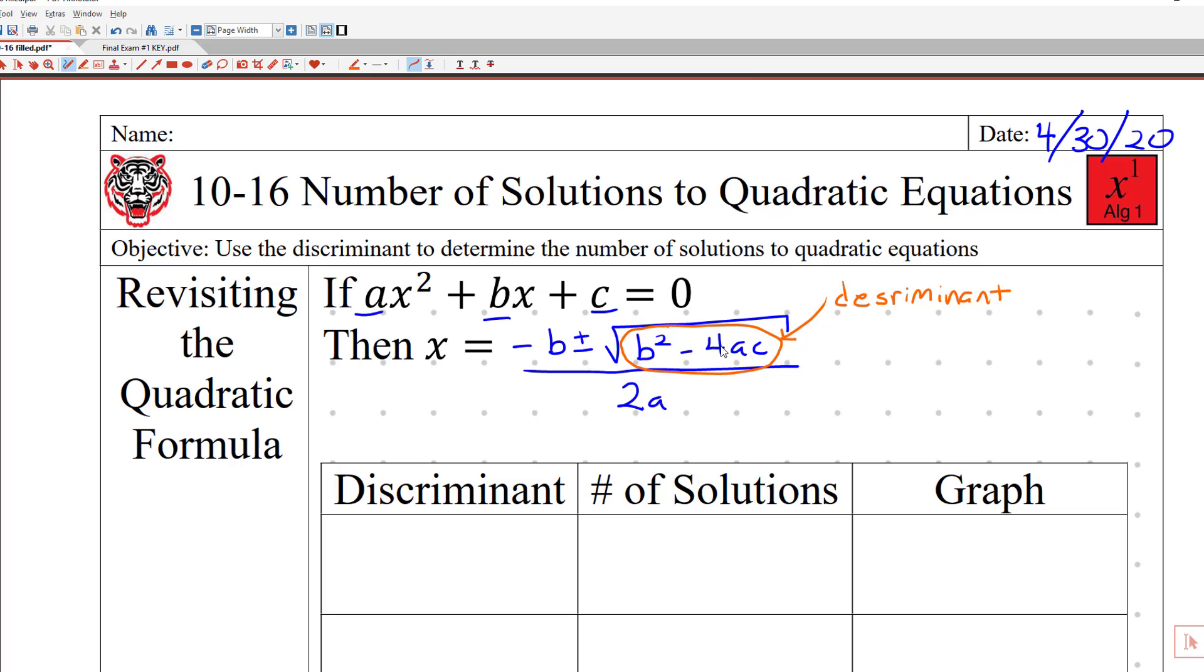And what happens if I have a negative under here? If I have a negative, then I have the square root of, I'm just making up a number now, negative 17. If you try this on the calculator, it'll say domain error, because you can't take the square root of a negative number.